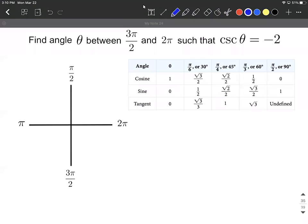On this example we want to find some angle theta between three pi over two and two pi such that our cosecant of theta is going to be negative two. So a little bit different type of problem.